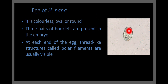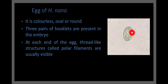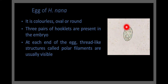The ova of H. nana are colorless and oval or round in shape. Three pairs of hooklets are present inside the embryo — you can see one pair, another pair, and a third pair — giving a total of six hooklets inside the embryo.